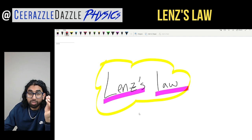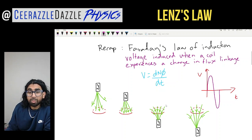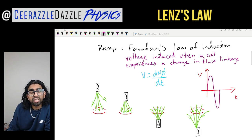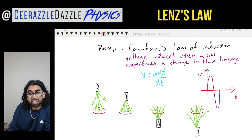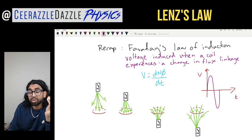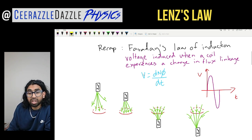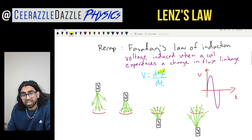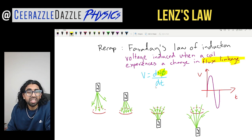Previously we talked about Faraday's Law of Induction. Let's have a quick recap before we move on. If you want me to go through that at a slower pace, watch that previous video. Recap: Faraday's Law of Induction - a voltage is induced when a coil experiences a change in flux linkage. The formula is v equals d(NΦ)/dt, where NΦ stands for the flux linkage and t is time.